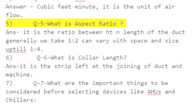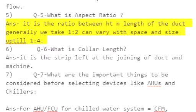Q5: What is aspect ratio? Answer: It is the ratio between height and length of the duct. Generally we take 1 to 2, but it can vary with space and size up to 1 to 4.